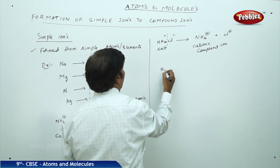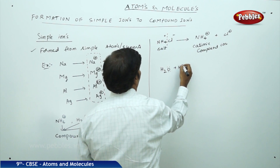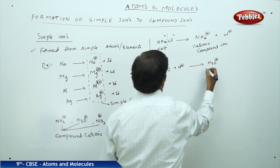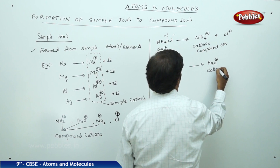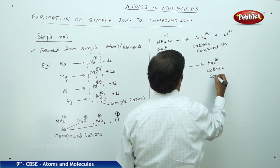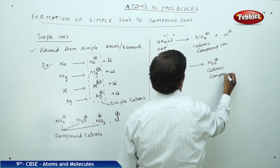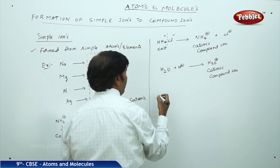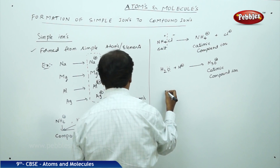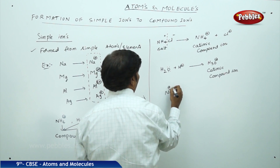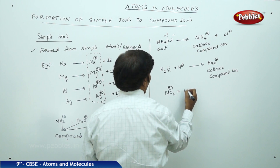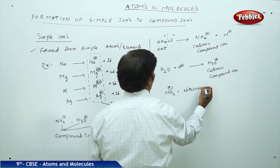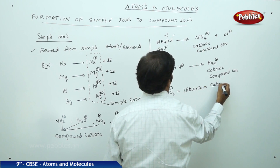For example, H2O contains two lone pairs; it adds one proton and forms H3O+, which is a cationic compound ion. Similarly, NO2+ is called the nitronium cation — this is also a compound cationic species.